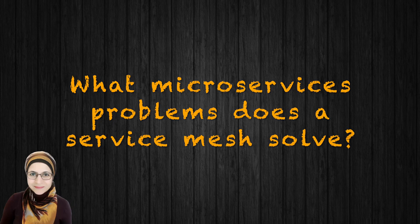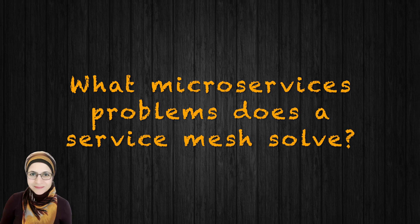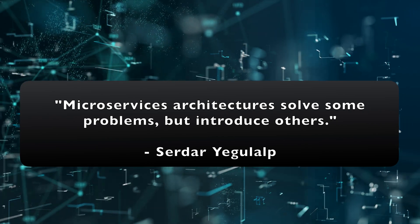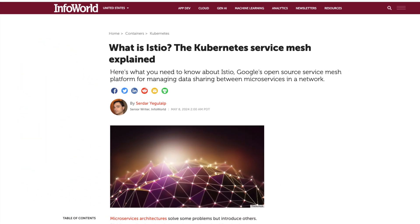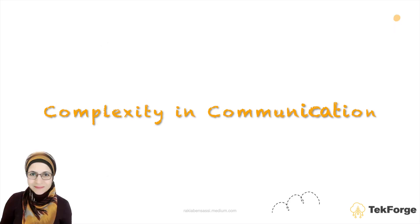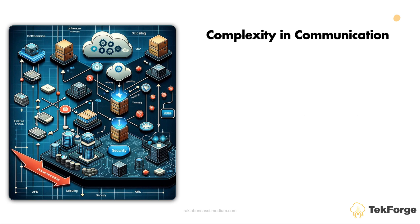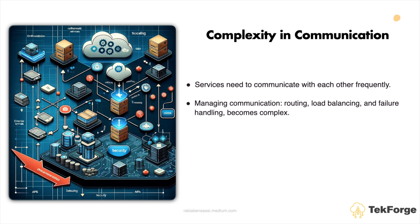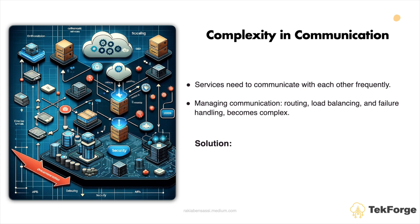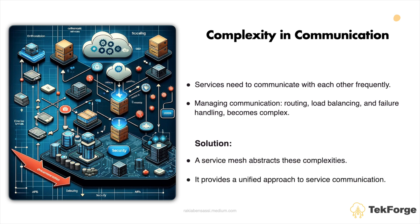What microservices problems does the service mesh solve? Microservice architectures solve some problems but introduce others. When organizations adopt a microservice architecture, they encounter several challenges. Complexity in communication: in a microservices architecture, services need to communicate with each other frequently. Managing this communication — especially routing, load balancing, and failure handling — becomes complex. A service mesh abstracts these complexities, providing a unified approach to service communication.